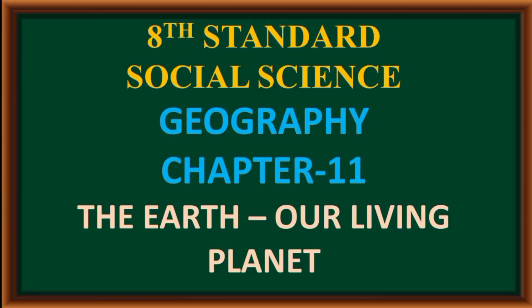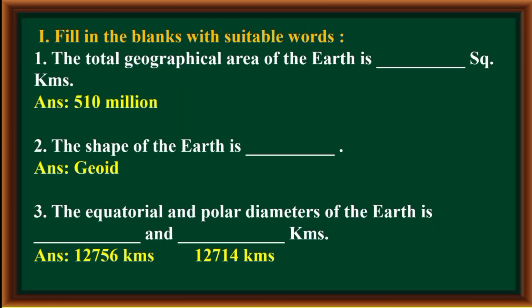8th standard Social Science Geography, Chapter 11: The Earth Our Living Planet. Fill in the blanks with suitable words. The total geographical area of the earth is 510 million square kilometers. The shape of the earth is geoid. The equatorial and polar diameters of the earth are 12,756 and 12,714 kilometers.